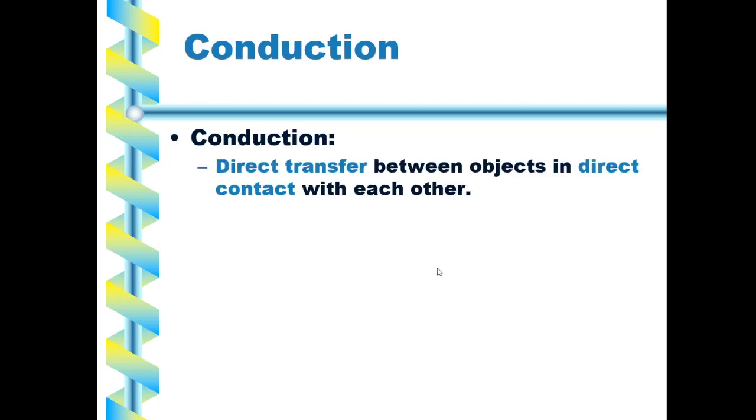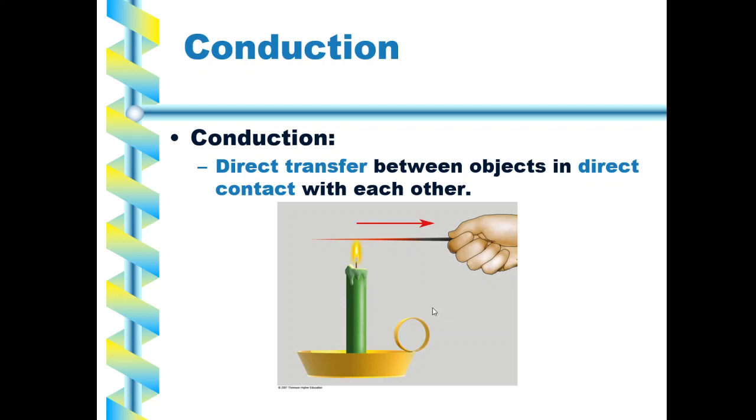Conduction. Conduction is the direct transfer between objects in direct contact with each other. It is just like you see here. A candle transfers its heat and energy to the stick or the metal poker and then to your hand. So this is what we call conduction, direct contact. You could also say like putting a spoon in a pan of boiling water. It's conducting that heat to the spoon.